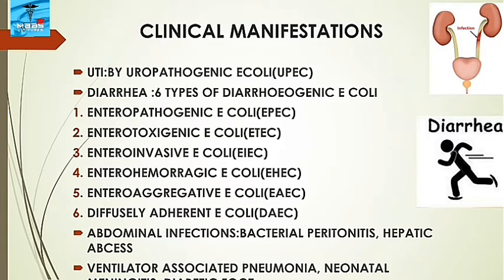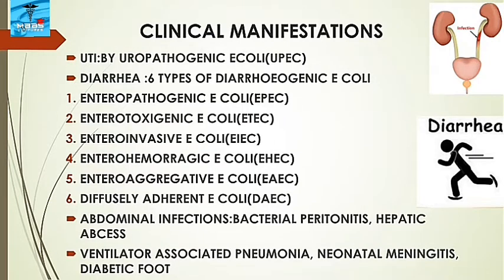The main clinical manifestations are UTI and diarrhea. UTI is caused by uropathogenic E. coli. Diarrhea is caused by six types of diarrheagenic E. coli: enteropathogenic, enterotoxigenic, enterohemorrhagic, enteroinvasive, enteroaggregative, and diffusely adherent E. coli. E. coli also causes abdominal infections like bacterial peritonitis, hepatic abscess, ventilator-associated pneumonia, neonatal meningitis, and diabetic foot.